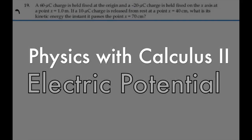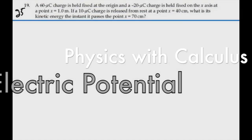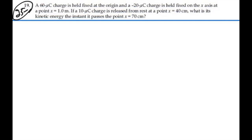Here's problem 2519. A 60 micro coulomb charge is held fixed at the origin and a minus 20 micro coulomb charge is held fixed on the x-axis at a point x equal to 1 meter. If a 10 micro coulomb charge is released from rest at x equal to 40 centimeters, what is its kinetic energy the instant it passes x equal to 70 centimeters?